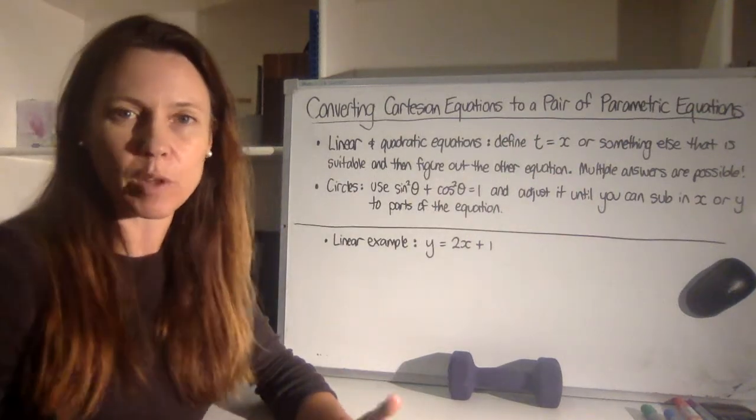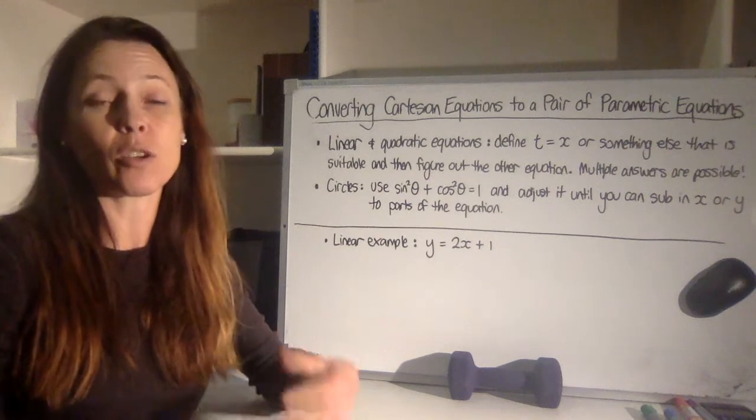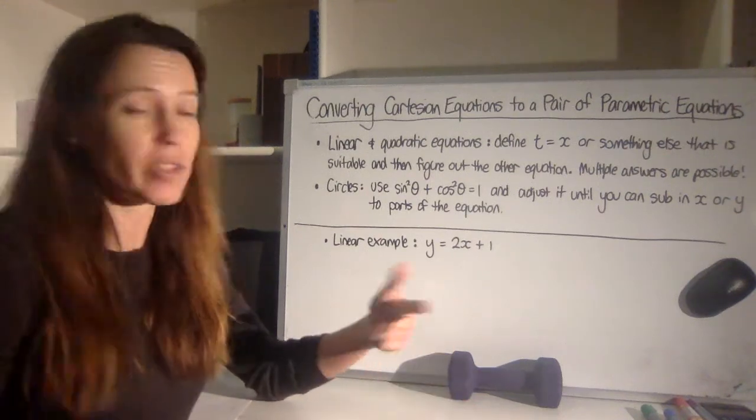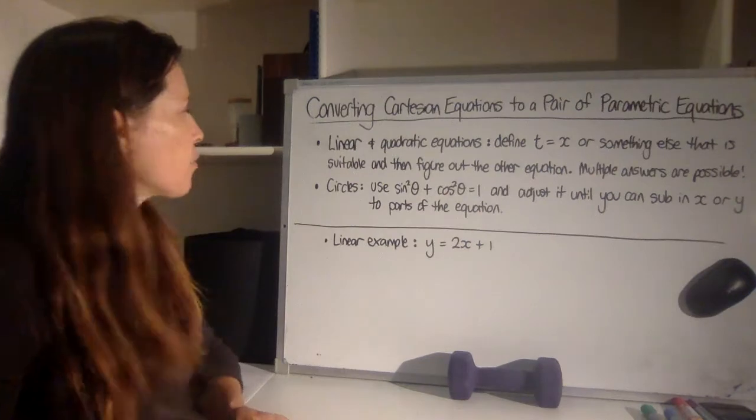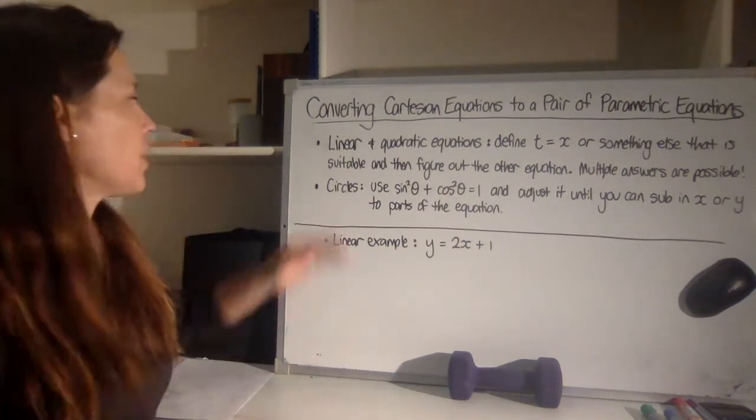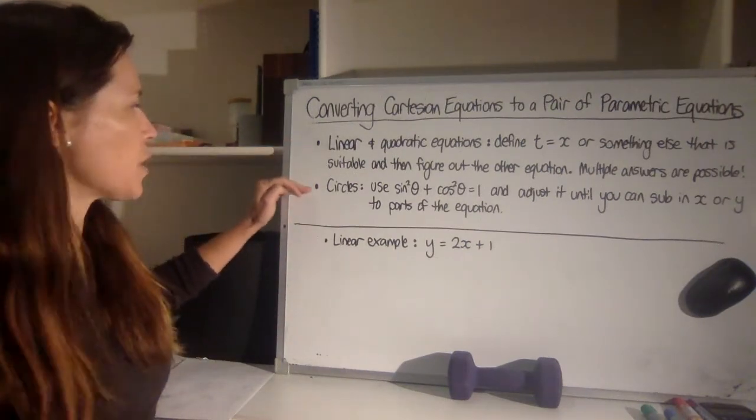Now we get to define what the parameter will be. So you can go ahead and call it t, or if in the case of using circles, you can call it theta if you want to. Now similar to before, we've got a slightly different strategy for the linear and quadratic ones or for the circles.